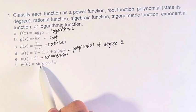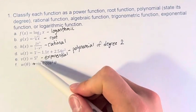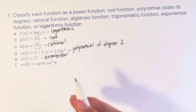v of theta is equal to sine theta times cosine squared theta. This is using the sine and cosine functions. This is a trigonometric function.